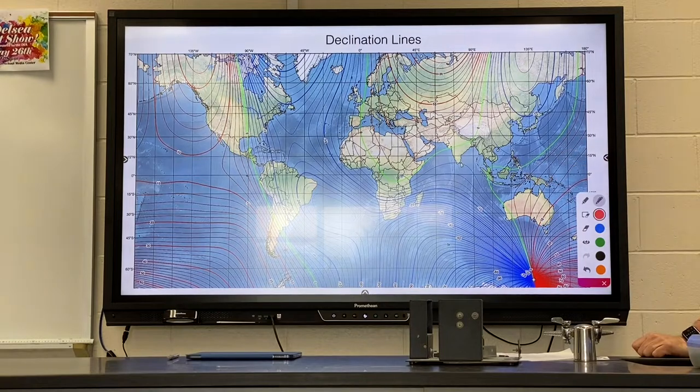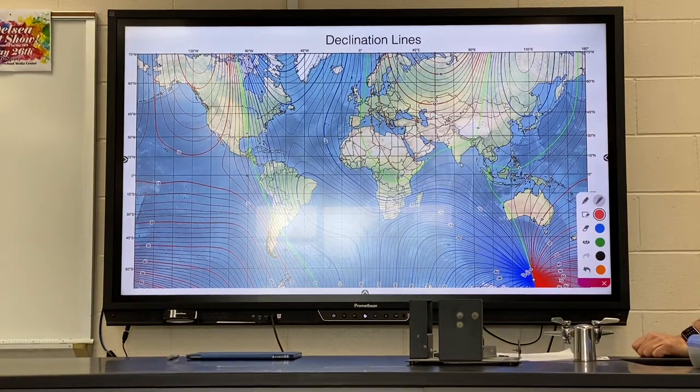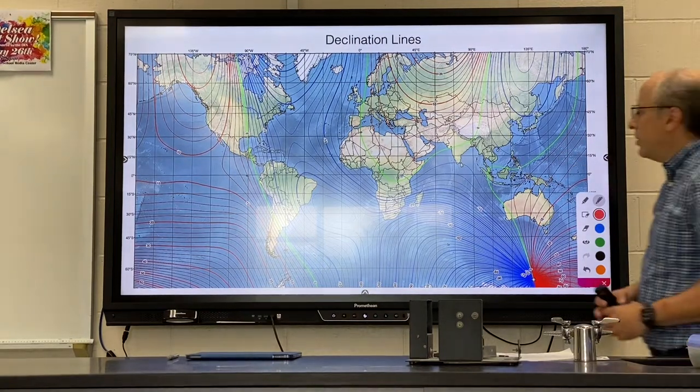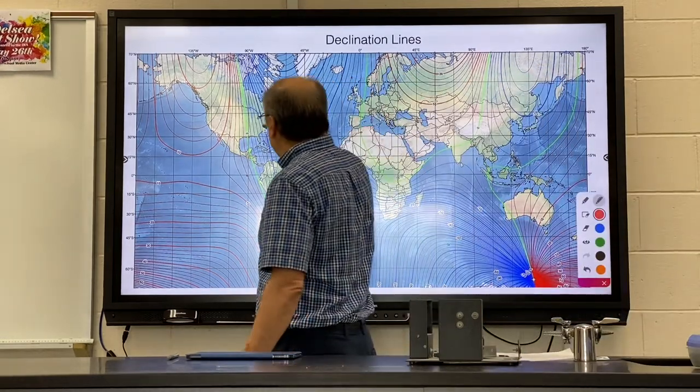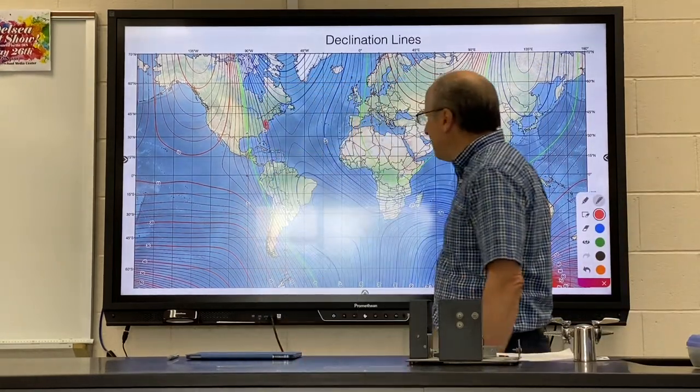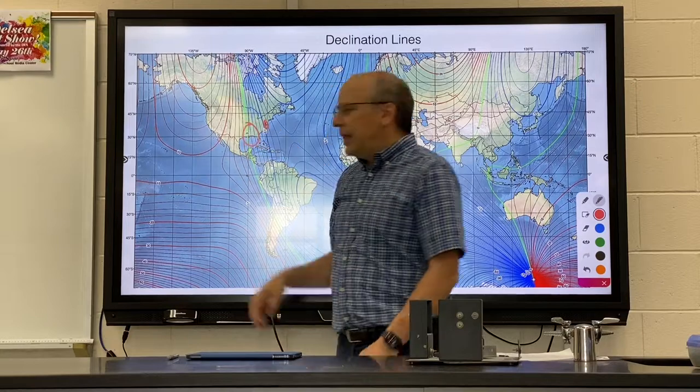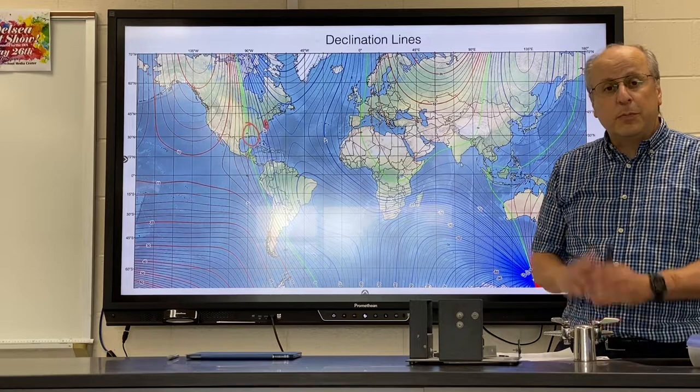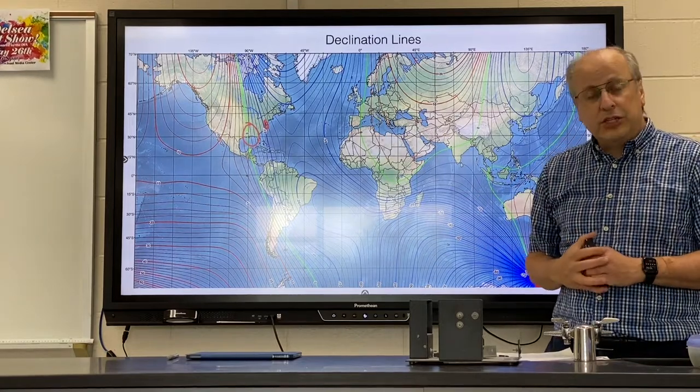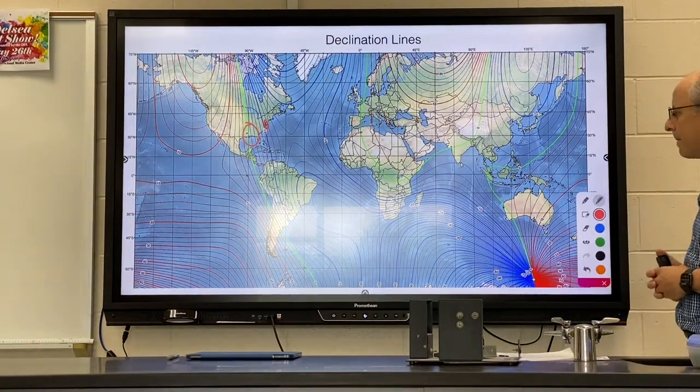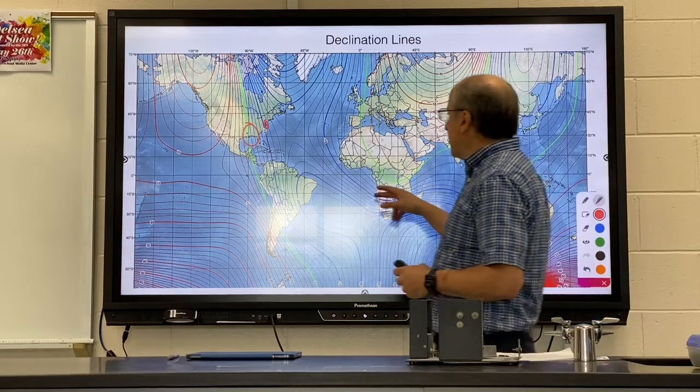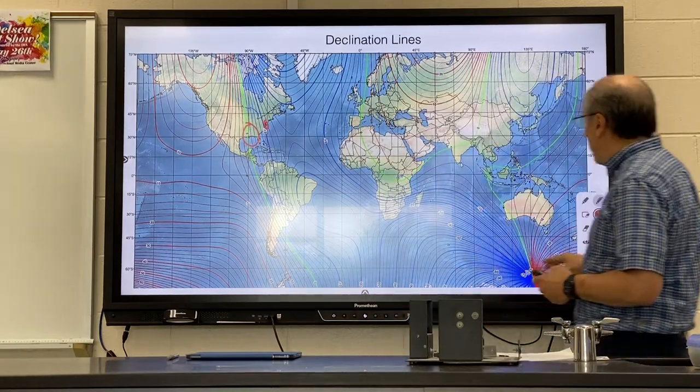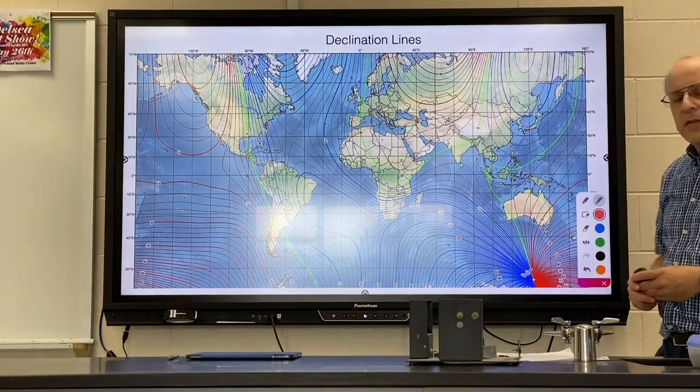This map shows the declination for a bunch of different locations on Earth. So you can see, again, Franklinville is a little more than 10. Again, anywhere along this green line has a magnetic declination of zero, which means their compasses point directly toward the geographic north pole. You'll see some are quite extreme, and some are almost perfectly right on.